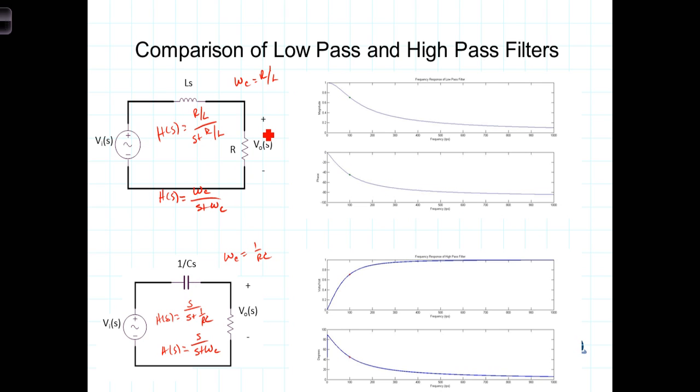You'll notice that the transfer function for the low-pass filter has no S in the numerator. Now from our understanding of transfer functions we know that values of S that make the numerator go to zero are known as the zeros of the function. Thus this function has no finite zeros.